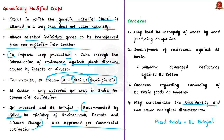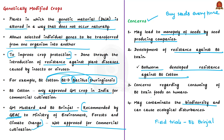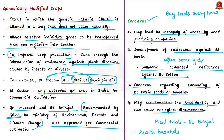Concerns associated with GM crops include: first, monopoly of seeds by seed-producing companies, as genetically modified seeds have terminator technology making seeds unusable for a second cultivation, forcing farmers to buy seeds each time. Second, the development of resistance against BT toxin — for example, the bollworm has developed resistance against BT cotton, which could happen with BT brinjal too, making GM crops vulnerable to pests over time. Third, widespread concerns regarding consumption of BT toxin foods and potential serious health hazards to humans. Finally, GM crops may contaminate biodiversity and cause ecological disturbances.